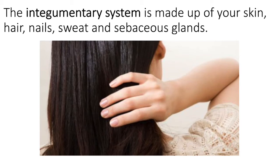The primary function of the integumentary system is protection. It protects your body from stressors like UV light, mechanical stressors, abrasions, and lacerations. The epidermis on the outside is extremely protective, and the underlying dermis is also protective. We also need protection from pathogens — there are antimicrobial components to the skin, as well as cells that protect against pathogens.